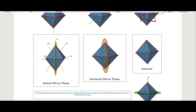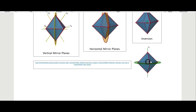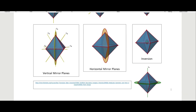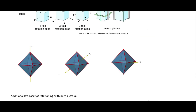The S4 is a C4 followed by sigma h — you can see the C4 happening and then the sigma h. In the PDF linked in the description, these animations may not all be included, but you can click a link to reach the website that has the animations if you want to look at them in more detail.